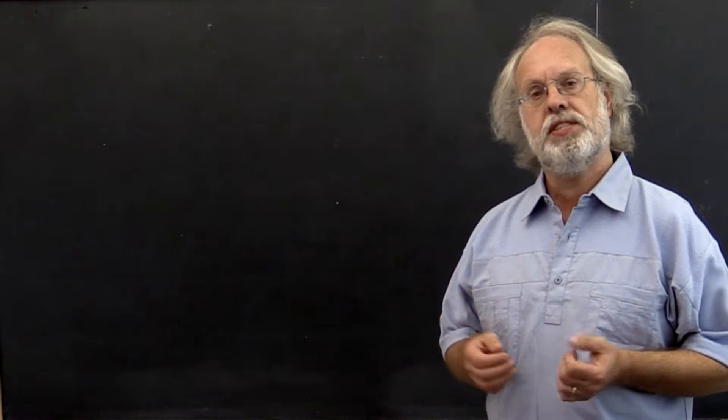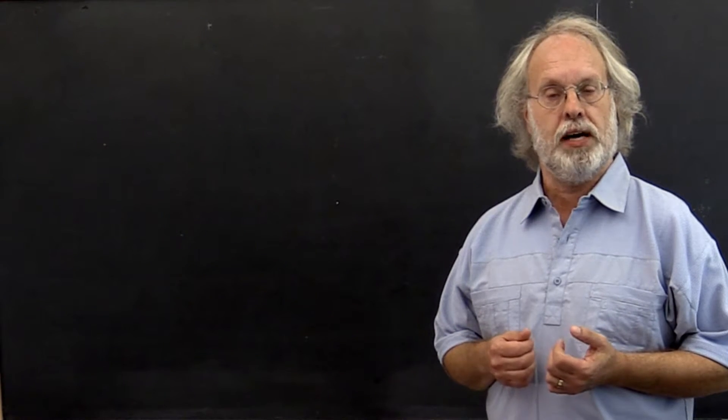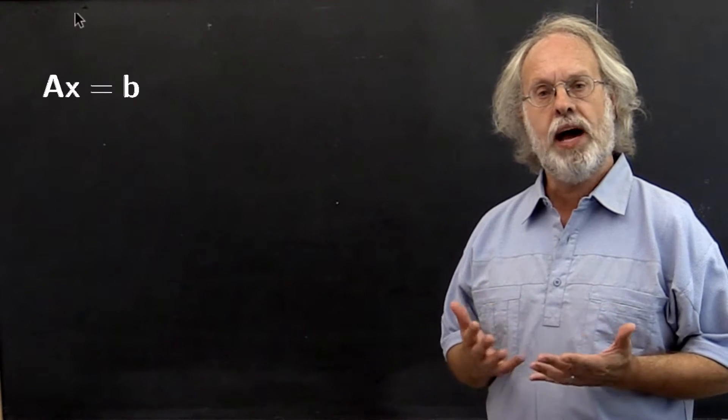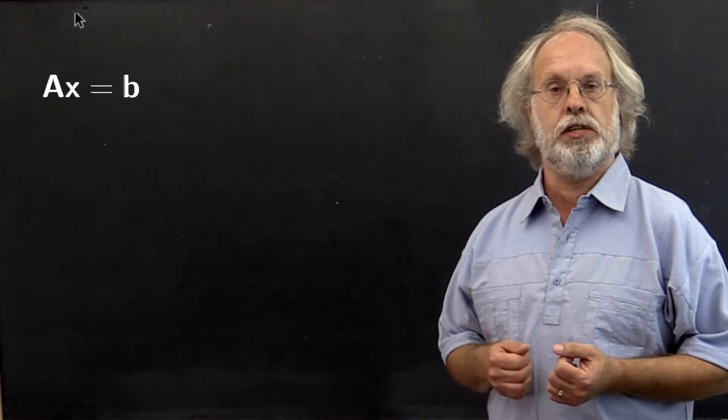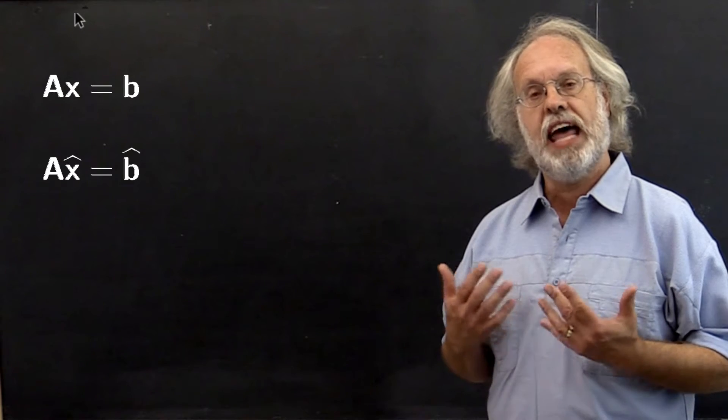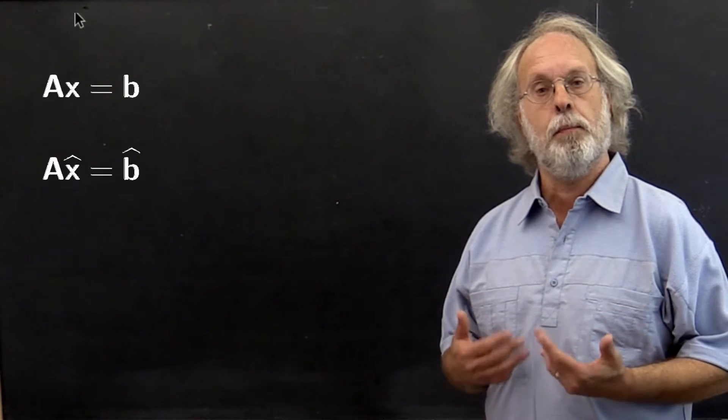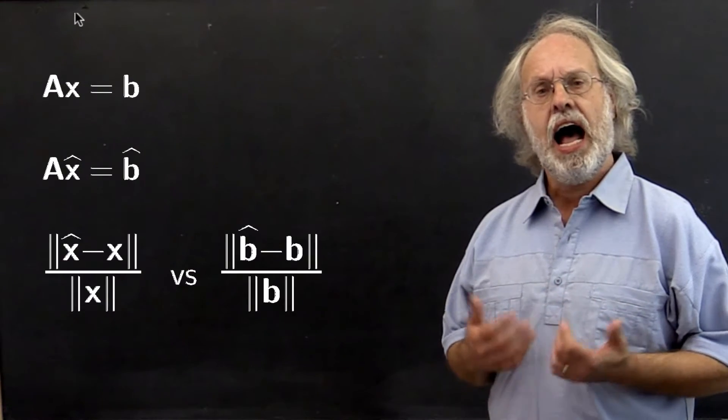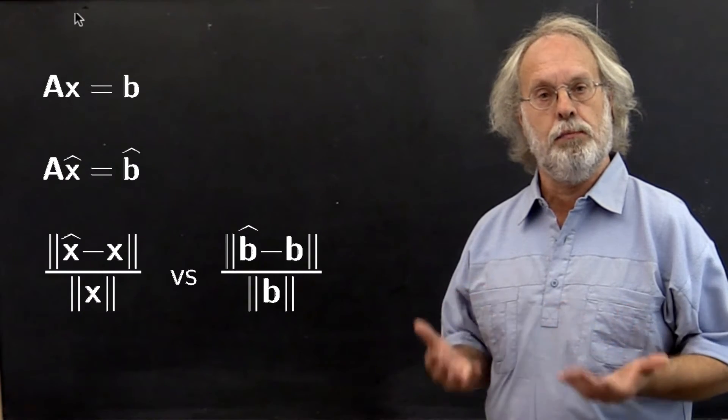A matrix often represents a linear transformation or mathematical operator. How accurately we can compute with that matrix, whether it is multiplying with it or solving a linear system, depends on how much it amplifies the change in the vector upon which it acts. How can we measure the change in the input and output?